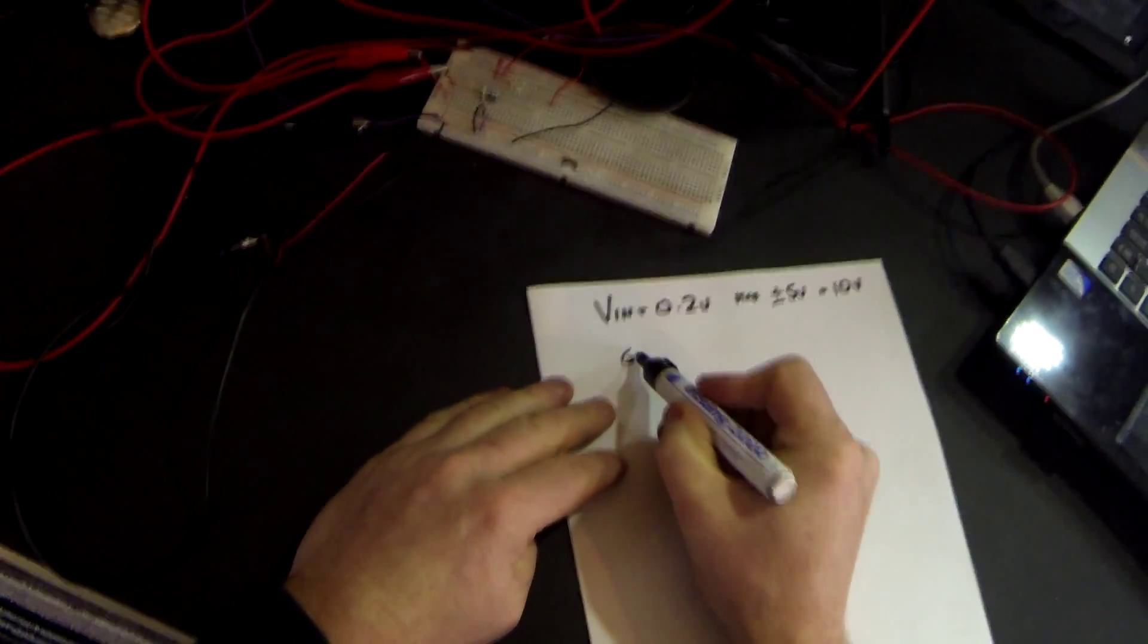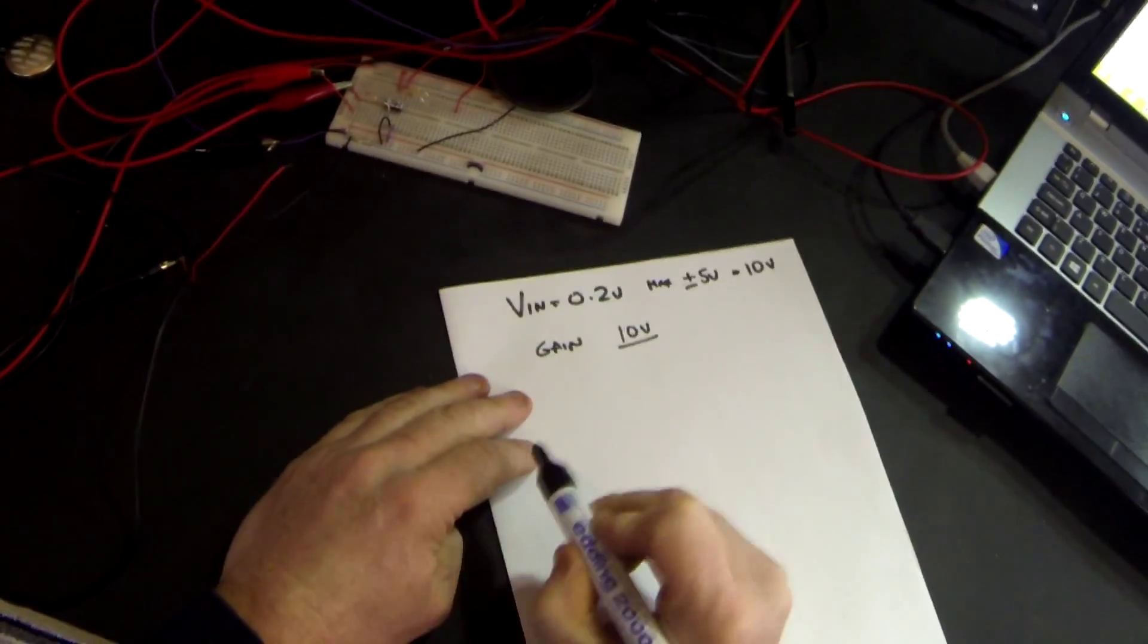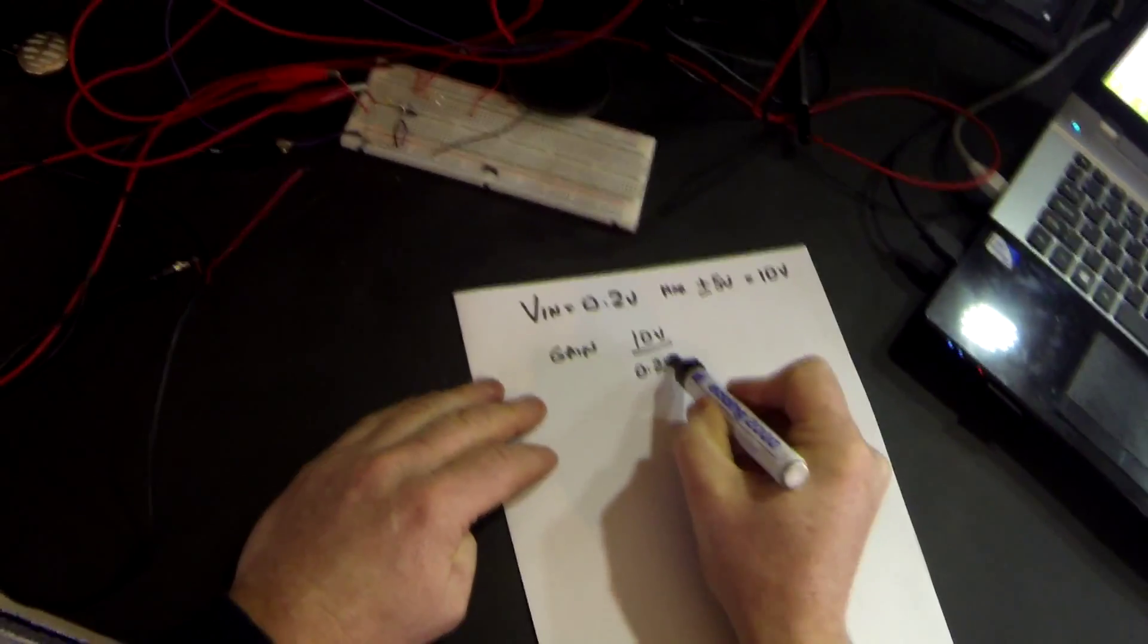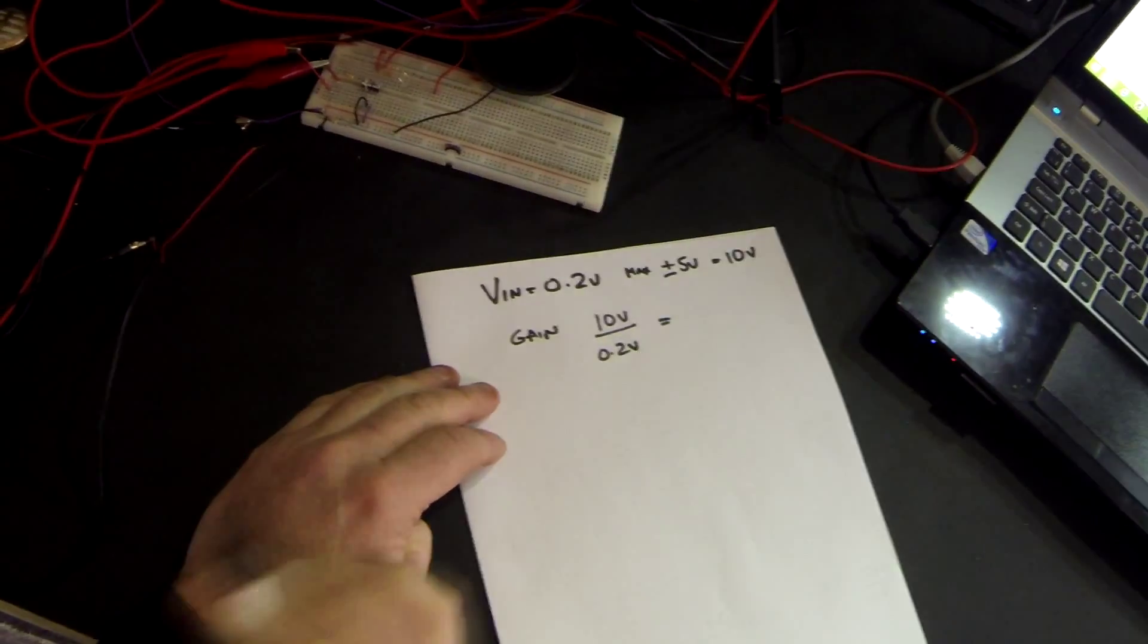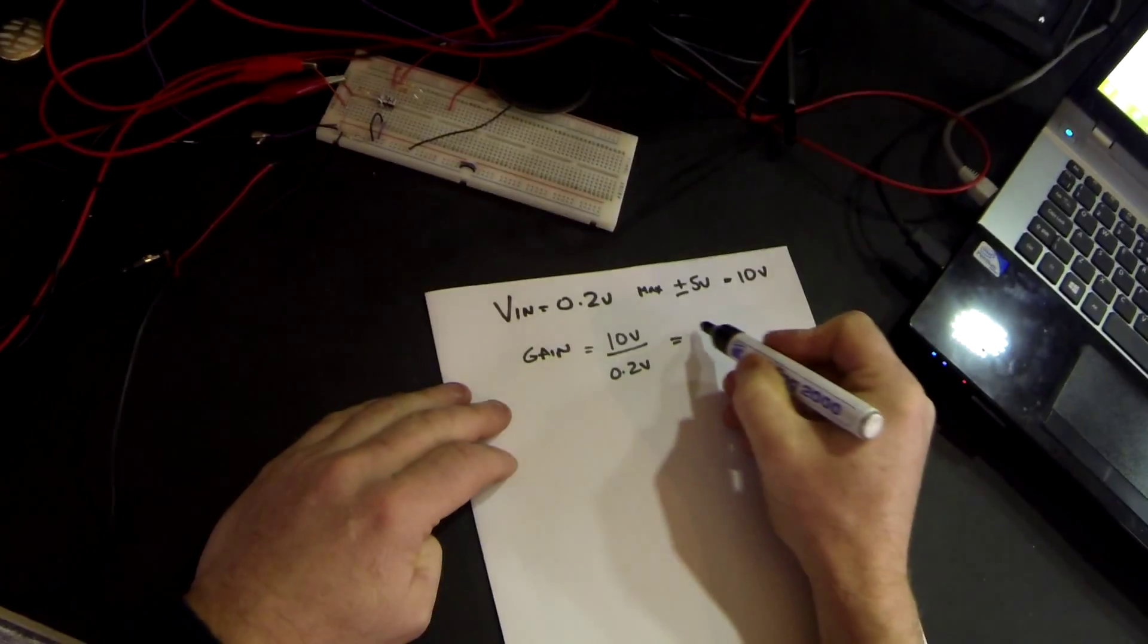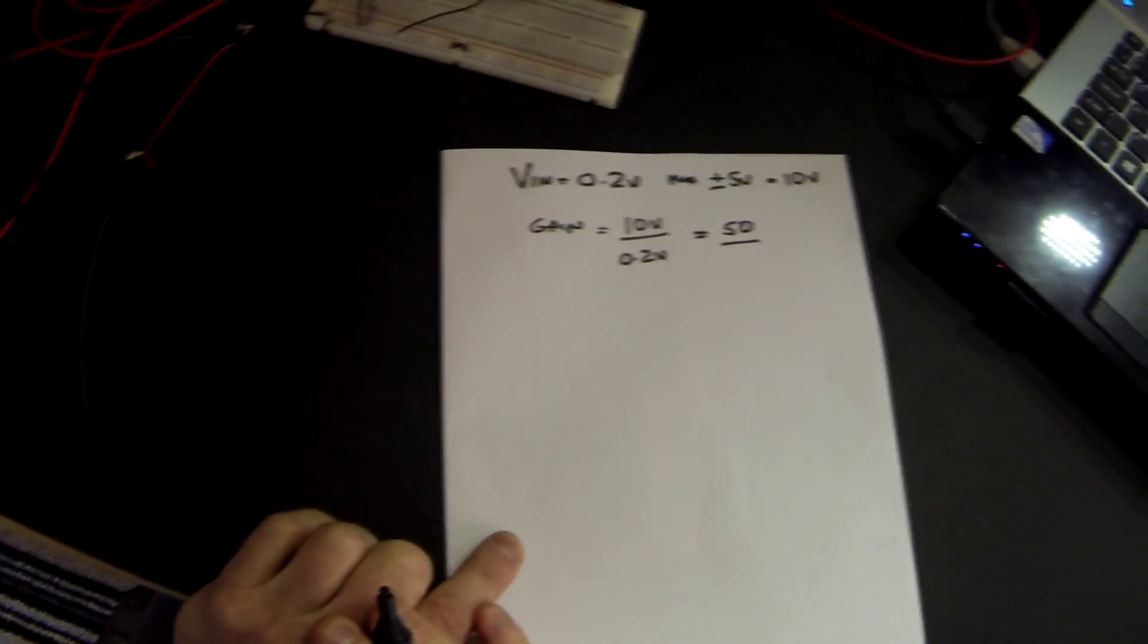So what gain do we want from our amplifier? Well we know that if the maximum is 10 and the input is going to be 0.2, out divided by in gives us our gain which equals 50. Now this may seem a lot to some of you but actually it's nothing out of the ordinary.